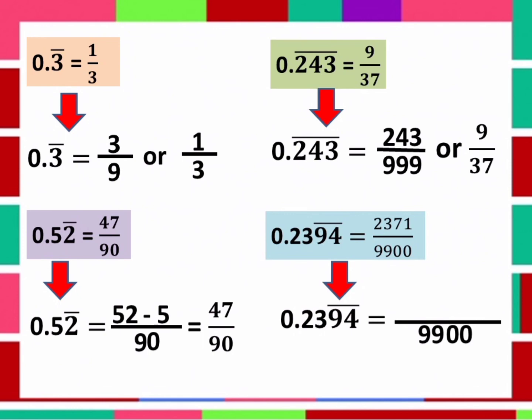Now, let's do the numerator. It will become 2,394 minus 23 because 23 is the non-repeating digit. So 2,394 minus 23 is equal to 2,371 over 9,900. Therefore, the answer is 2,371 over 9,900.